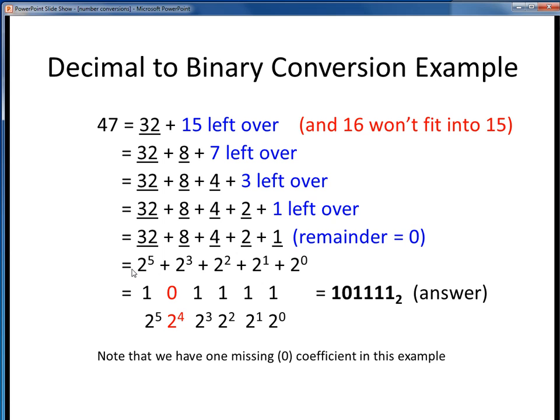So what we do for each factor of 2 term which is present, we put a coefficient of 1 in the ultimate binary result. But notice here that we have a 2 to the 4th term that's missing. And we can't overlook that, that's a common mistake. So what we'll do instead is we'll put a 0 for any terms in the expansion which are missing.